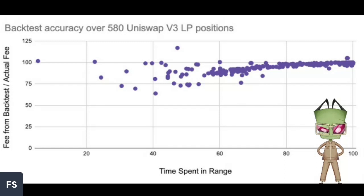If the price moves down more than 10%, you would have taken your USDT that is in your liquidity position and used it to fill Bitcoin orders — so people trying to swap Bitcoin for USDT. And if it goes all the way outside of your range, now you're only holding Bitcoin because you've used all of the USDT you provided to fill those Bitcoin orders.